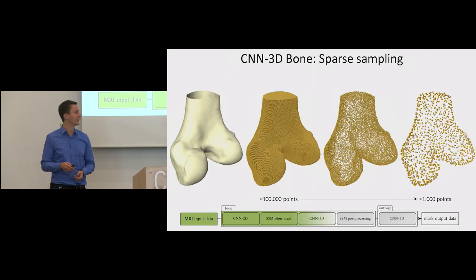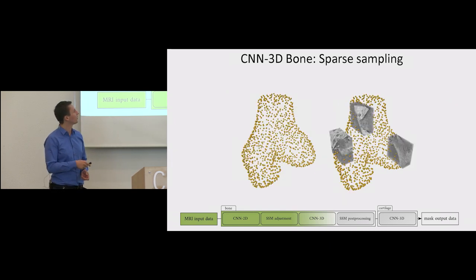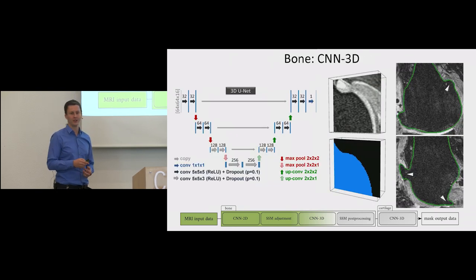For this reason we added another step CNN-3D, a three-dimensional CNN. This step is starting with a sampling so we sample from roughly 100,000 outline points and get sparser to 1,000 points which are nicely distributed in space. For each of these points we sample MRI sub-volumes. These sub-volumes are really three-dimensional and we segment them with our 3D CNN.